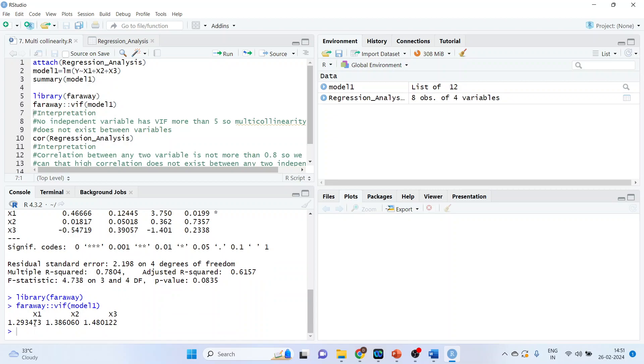Just see this value. It's nearer to 1 and 2. Our interpretation is no independent variable has VIF more than 5, so multicollinearity does not exist between the variables.